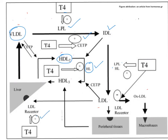LDL receptor expression is increased in the presence of more T3/T4, so cells have more LDL receptors on the surface, allowing LDLs to be rapidly internalized and cleared from the circulation. Also, increased T3/T4 inhibits PCSK9 expression more strongly, so PCSK9 is no longer binding to LDL receptors, further facilitating LDL uptake.